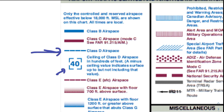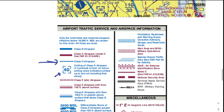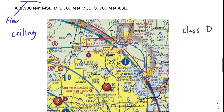If it has a minus ceiling value, it indicates surface up to but not including that value. So let's see if we can find a number within that square that matches up to our legend. If you have a keen eye, you'll see we have this 29 that's inside of that square. So that means the ceiling of the Class D airspace is 29 — and of course this is not 29 feet, it's in hundreds of feet, so we append two zeros. It's actually 2,900 feet.